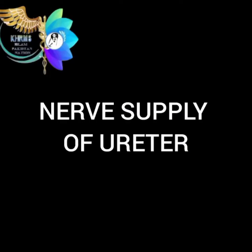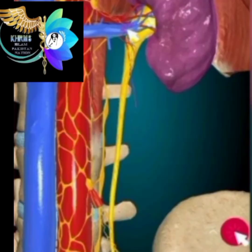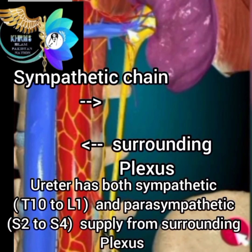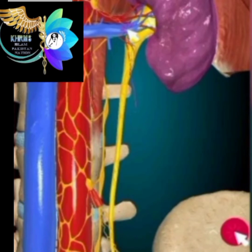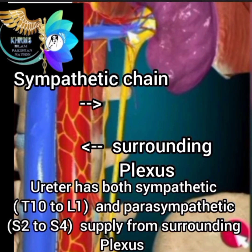Nerve supply of ureter: the ureter has both sympathetic (T10 to L1) and parasympathetic (S2 to S4) supply from the surrounding plexus.